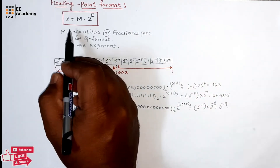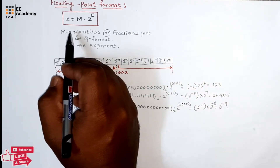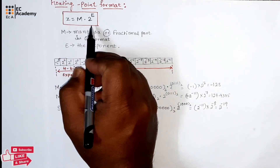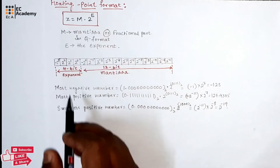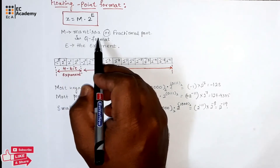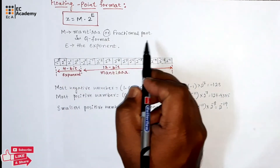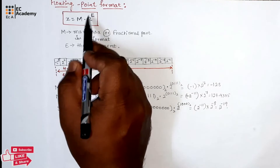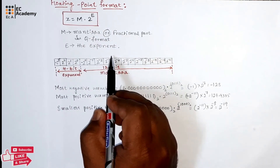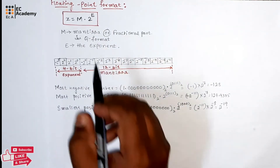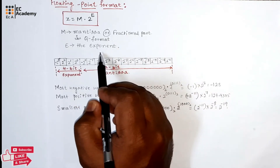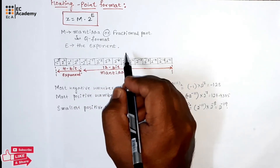The general format of floating point number representation is given as x = m × 2^e. Here m is the mantissa or fractional part in Q format, and e is the exponent. The mantissa and the exponent are both signed numbers.